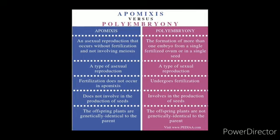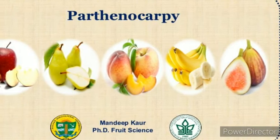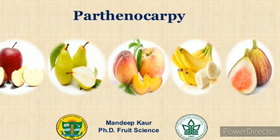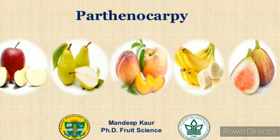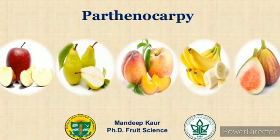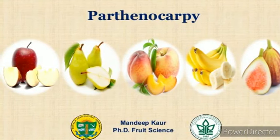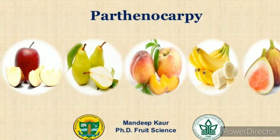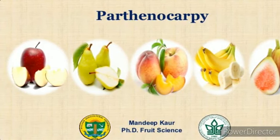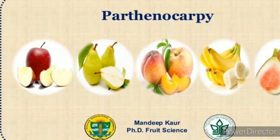The next term is parthenocarpy, which is the production of fruits without fertilization. Its benefit is the commercial production of seedless fruits — for example, seedless grapes. These seedless fruits are very useful in juice, jam, and jelly industries. To summarize the difference: apomixis is the production of seeds without fertilization, while parthenocarpy is the production of fruits without fertilization.